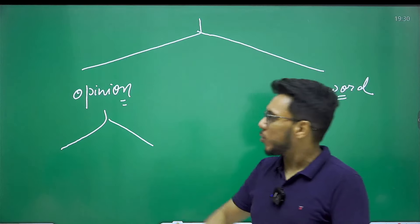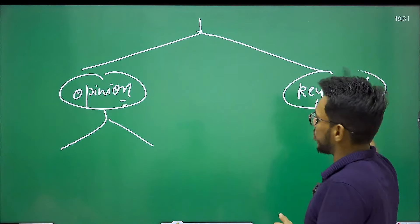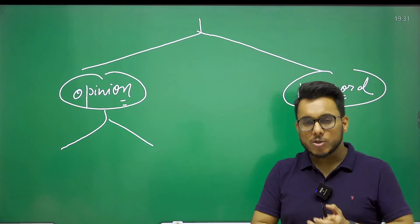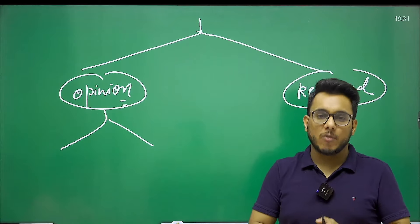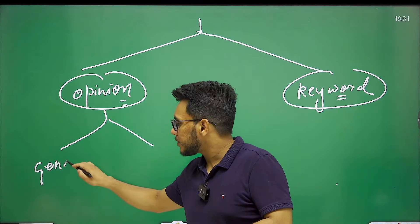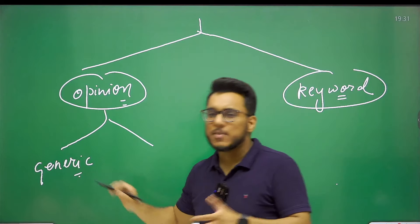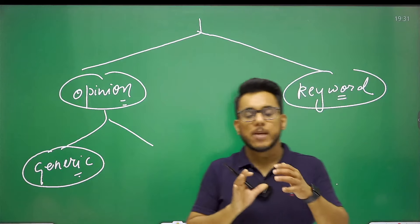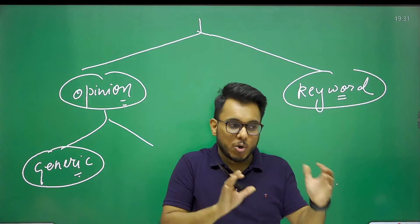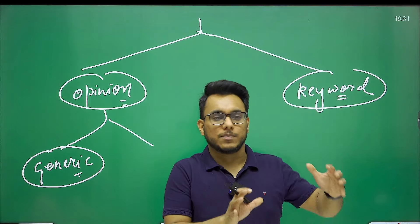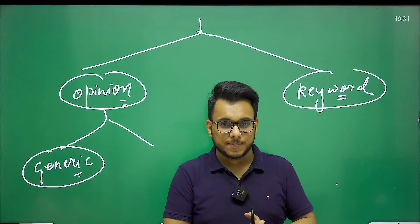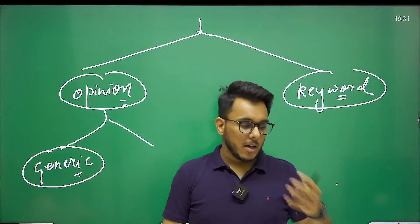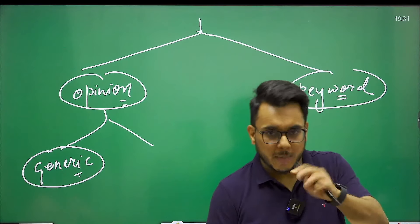First let us talk about opinionated questions. In opinionated questions, there are two types. Number one, questions where the nature is very much generic — questions which you will be able to answer even if you have not prepared for the ethics paper per se. Any person might be able to answer these without in-depth knowledge. Let me show you with the help of an example.